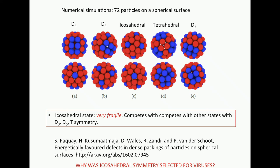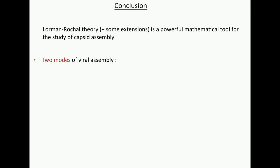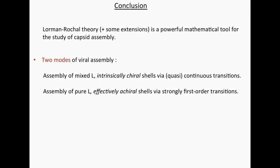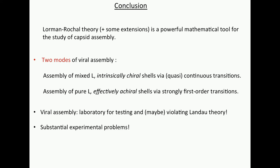So in conclusion, Lorman-Rochelle theory is, with some extension, a very powerful mathematical tool for the study of capsid assembly. We found two modes. First for mixed L, it's a continuous transition or weakly first order. For pure L, for certain limited even L, you have strongly first order transition. So you can get two completely different modes of assembly. Of course, this is the more interesting one. Viral assembly is a wonderful laboratory for the testing and maybe violation of Landau theory.